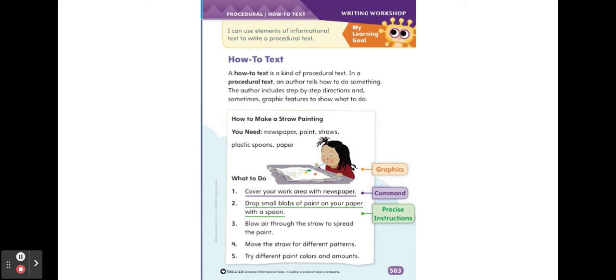So if we take a look at the image below, it says 'How to Make a Straw Painting.' You need newspaper, paint, straws, plastic spoons, and paper. What to do: Number one, cover your work area with newspaper. Number two, drop small blobs of paint on your paper with a spoon. Number three, blow air through the straw to spread the paint.